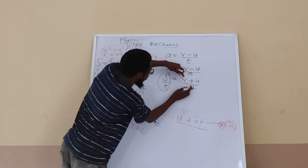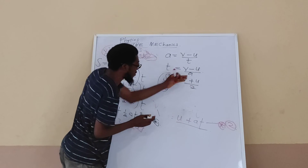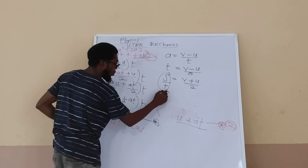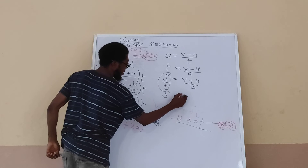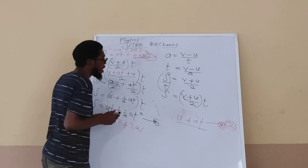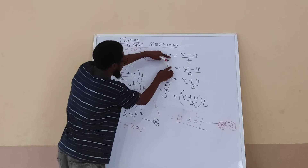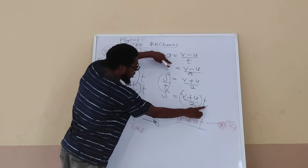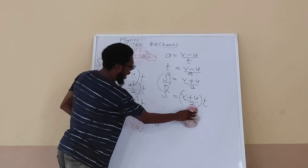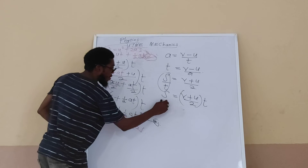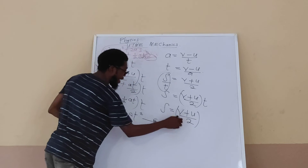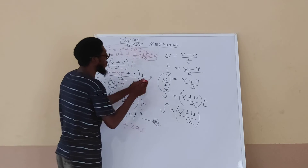Recall that average velocity gives s = (v + u) / 2 × t. Substituting t = (v − u) / a into this equation gives s = (v + u) / 2 × (v − u) / a. The numerator expands as a difference of squares.